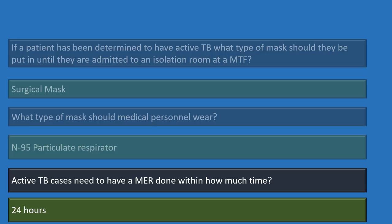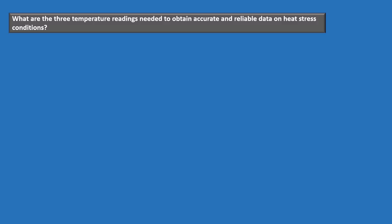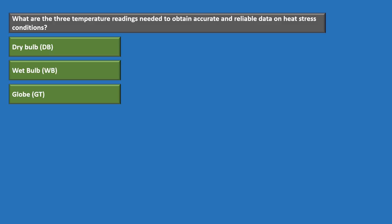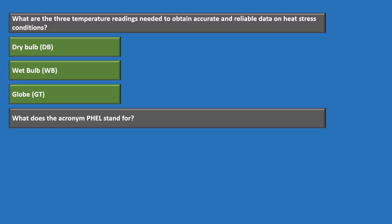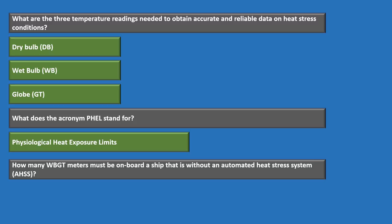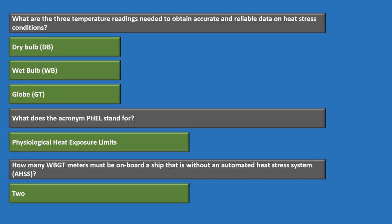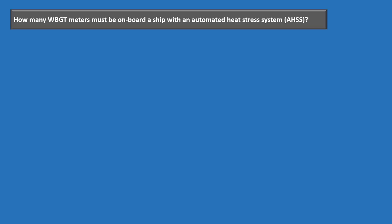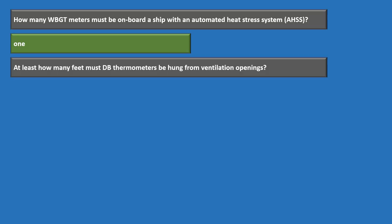Moving to heat stress. The three temperature readings needed for accurate heat stress data are dry bulb, wet bulb, and globe temperature. FELL stands for physiological heat exposure limits. A ship without an automated heat stress system needs two WBGT meters. A ship with an automated heat stress system needs only one. Dry bulb thermometers must be hung at least two feet from ventilation openings.